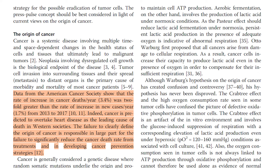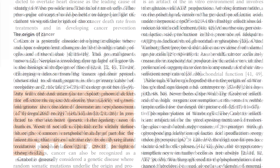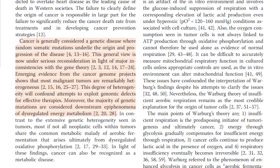The failure to clearly define the origin of cancer is responsible in large part for the failure to significantly reduce the cancer death rate from treatments, and in developing cancer prevention strategies. Cancer is generally considered a genetic disease, where random somatic mutations underlie the origin and progression of the disease. This general view is now under serious reconsideration in light of major inconsistencies with the gene theory. Emerging evidence from the cancer genome projects shows that most malignant tumors are remarkably heterogeneous. This degree of heterogeneity will confound attempts to exploit genomic defects for effective therapies. Moreover, the majority of genetic mutations are considered downstream epiphenomena of dysregulated energy metabolism.